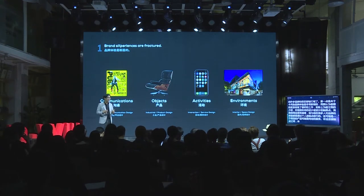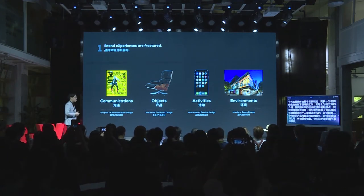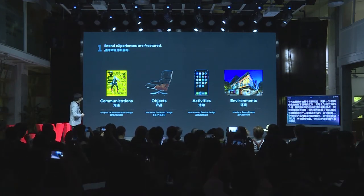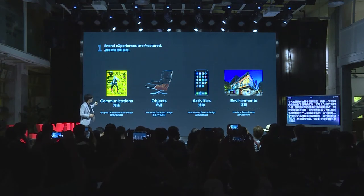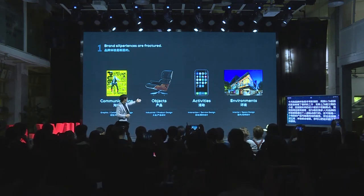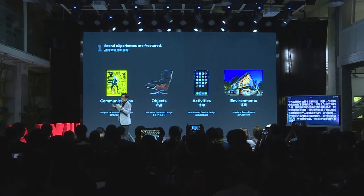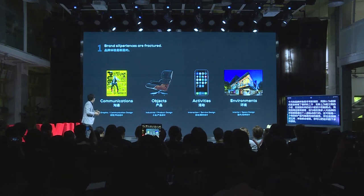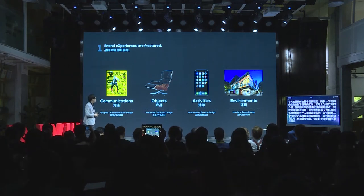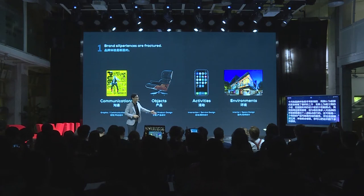From a design standpoint, design within school for a long time has been broken down into maybe designing from communication materials to objects, designing activities and environments. A lot of times we break down these disciplines in terms of graphic and communication design, industrial and product design, interaction and service design, and interior and space design.